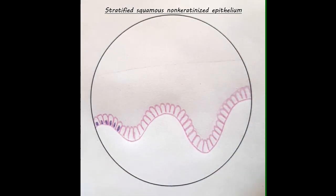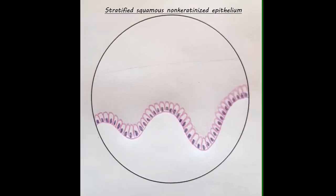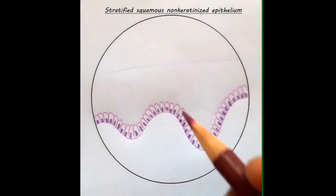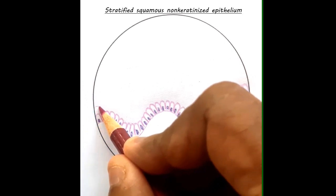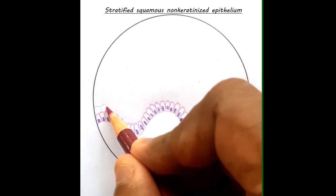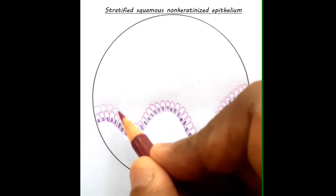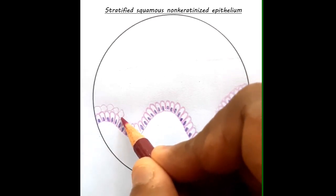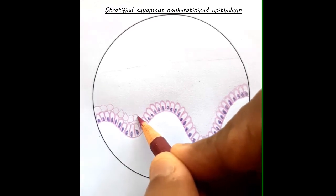Showing the hematoxylin stain. Once the nuclei are drawn, we have finished the basal layer of columnar cells. Now we are drawing the next layer, the intermediate layer of polygonal cells or polyhedral cells. They are drawn like this, with a polyhedral or a polygonal shape.